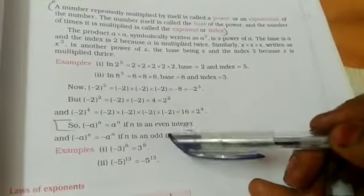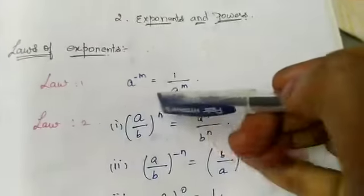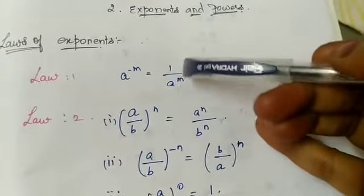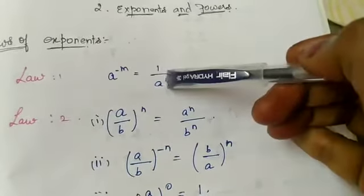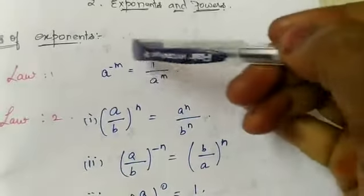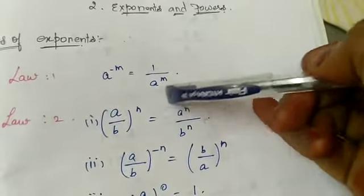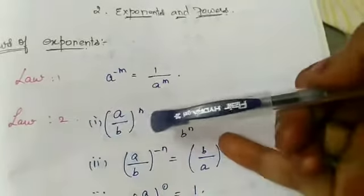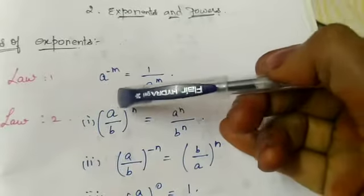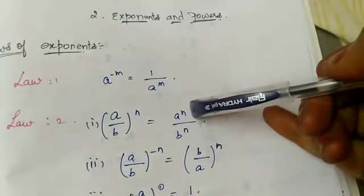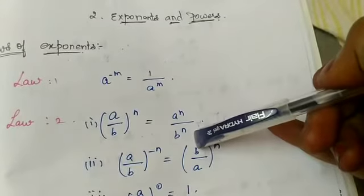Write these two rules in your notes, then go to the laws of exponents. Law 1: a^(-m) = 1/a^m — if the power is negative, the number is reciprocally changed to positive. Law 2: (a/b)^n = a^n / b^n — a division raised to power n means each numerator and denominator is taken separately to that power.